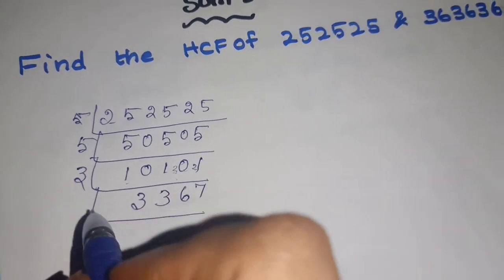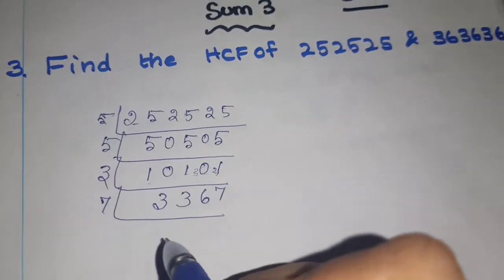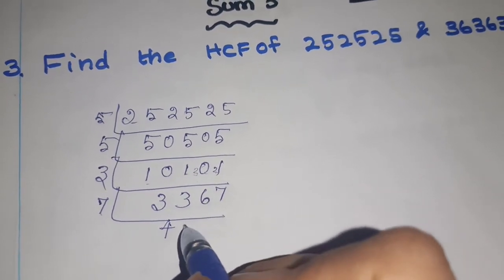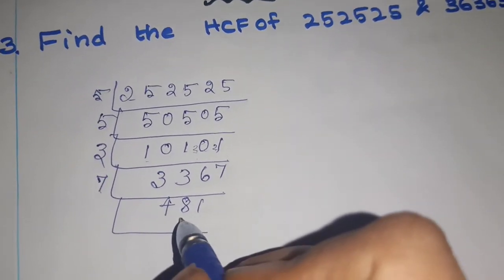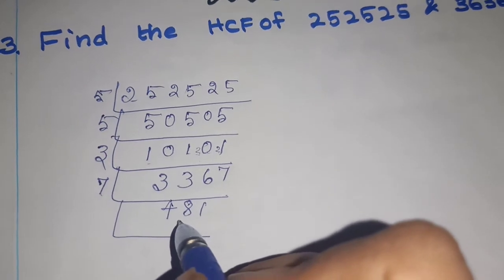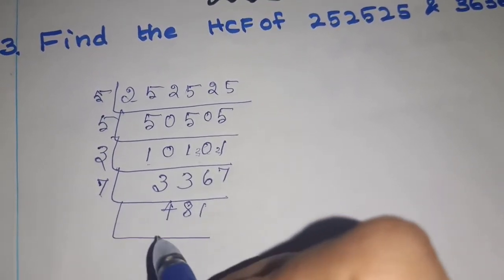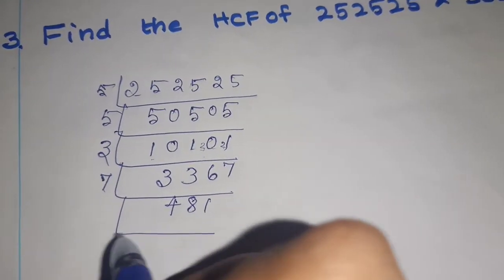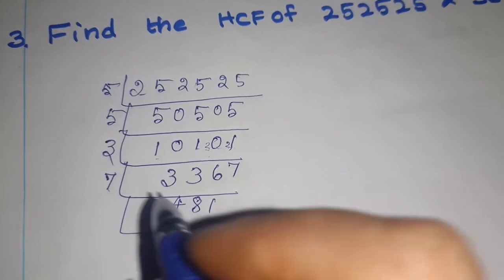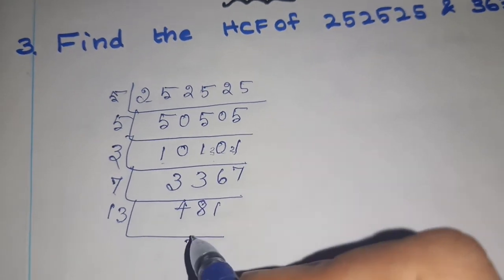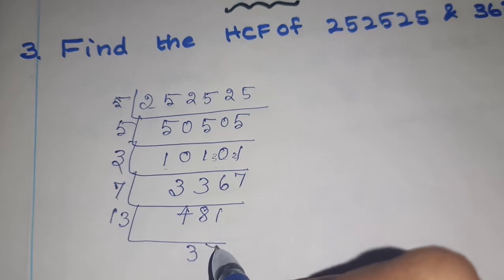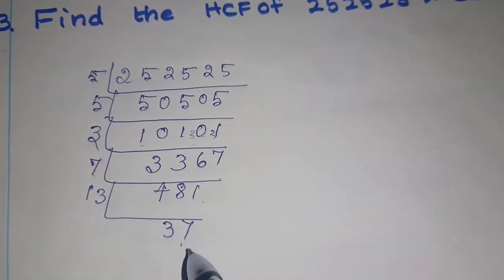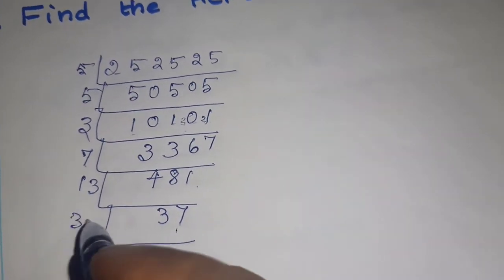5 is also not possible. 6 definitely not. So check with 7: 7 fours are 28, remainder 5, so 56. 8 sevens are 56. 7 ones are 7. Check again - this is also not divisible by 3. 7 is also not possible: 7 sixes are 42, remainder 61 - not possible in 7 tables. 9 is not a prime number, 10 is not a prime number. So 11: 11 fours are 44, remainder 41. Check with 13 table. 13 nines... 13 sevens are 91. 13 threes are 39, remainder 9. 13 sevens are 91. So 37 is a prime number - you can stop here.